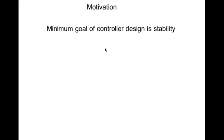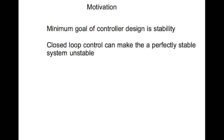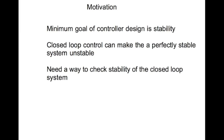Now the motivation: the minimum goal for controller design is stability — that's the least you can do. In this class we're talking about closed-loop control. It so happens that you can design your controller in a bad way and make a perfectly good system unstable. There has to be a way to check stability of the closed-loop system, and that is what this whole video is all about.